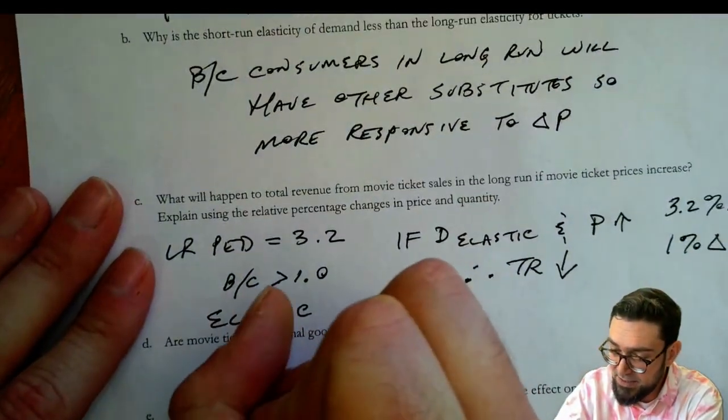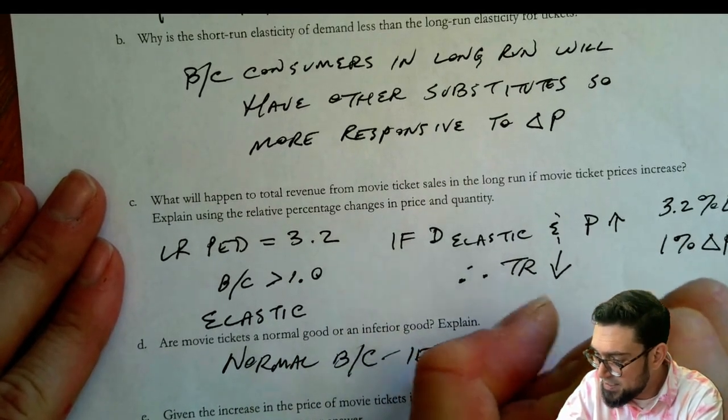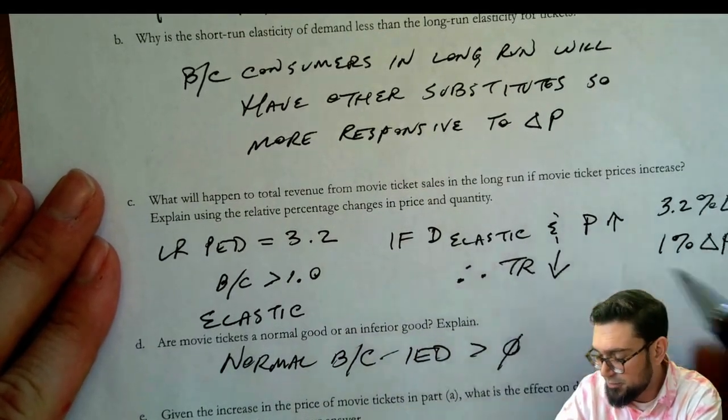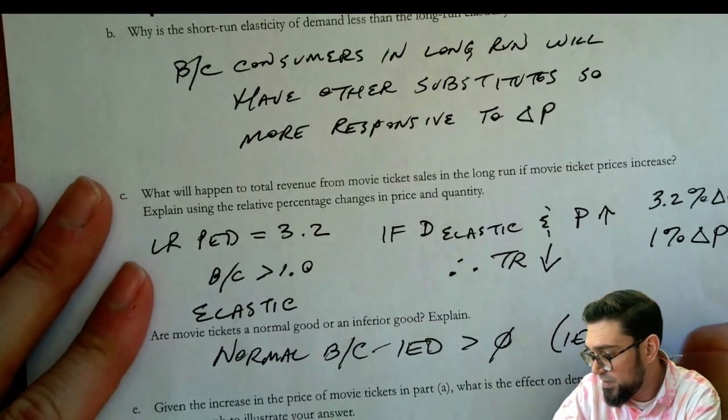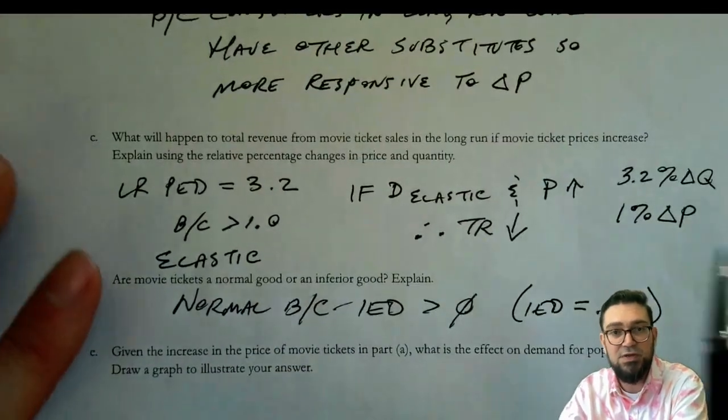Are movie tickets a normal good or an inferior good? Explain. So I'm going to look back up here. Income elasticity of demand for movie tickets is 0.75. So I would say normal because the IED is greater than zero and the IED equals 0.75. So just because it is a non-negative number, we know that it's a normal good.